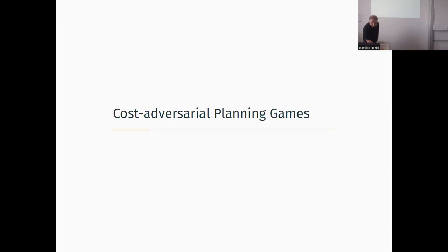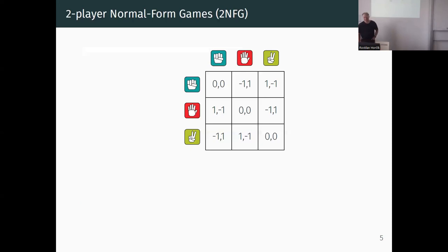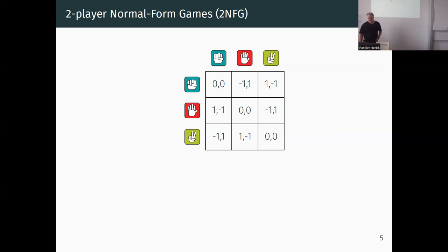Let me recall several definitions from game theory. I'll start with the classic: the definition of normal form games for two players. Likely everyone knows the rock-paper-scissors game. This is defined as a two-player normal form game, given by a matrix where each entry contains two numbers - the utilities for the first player (row player) and the second player (column player).